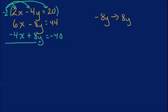Then all I have to do now is add down. So 6x plus negative 4x would give me 2x. These are opposites, so they cancel out. And that's the whole approach I want to use when solving using the elimination method, because I only want one variable. And 2x equals 44 plus negative 40, which gives me a positive 4.